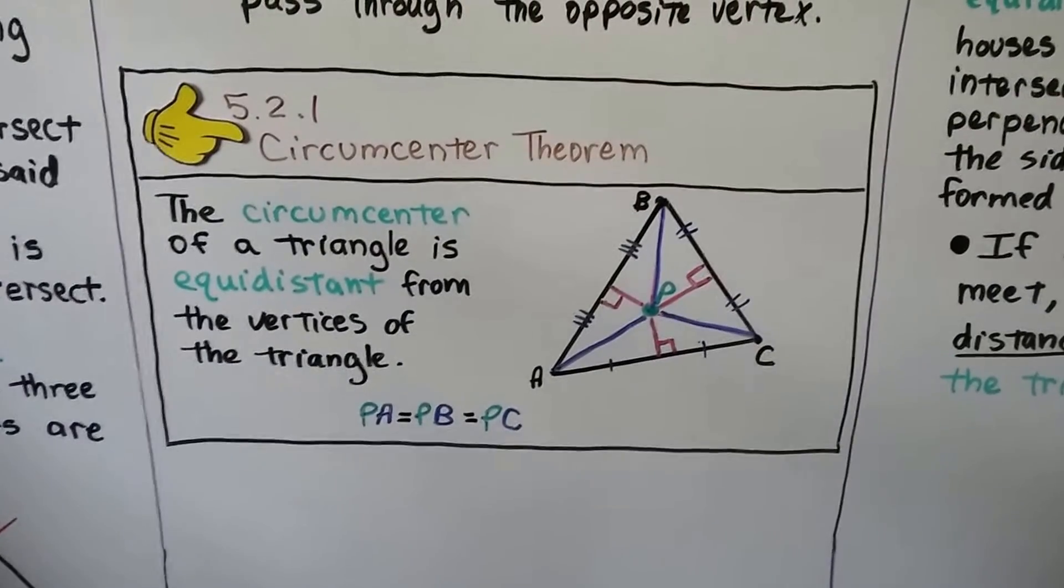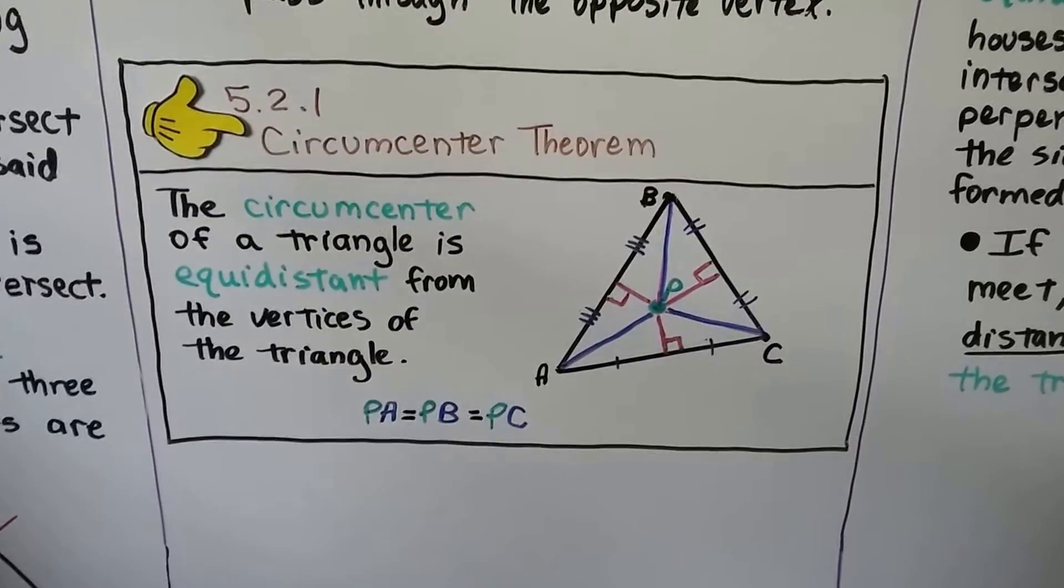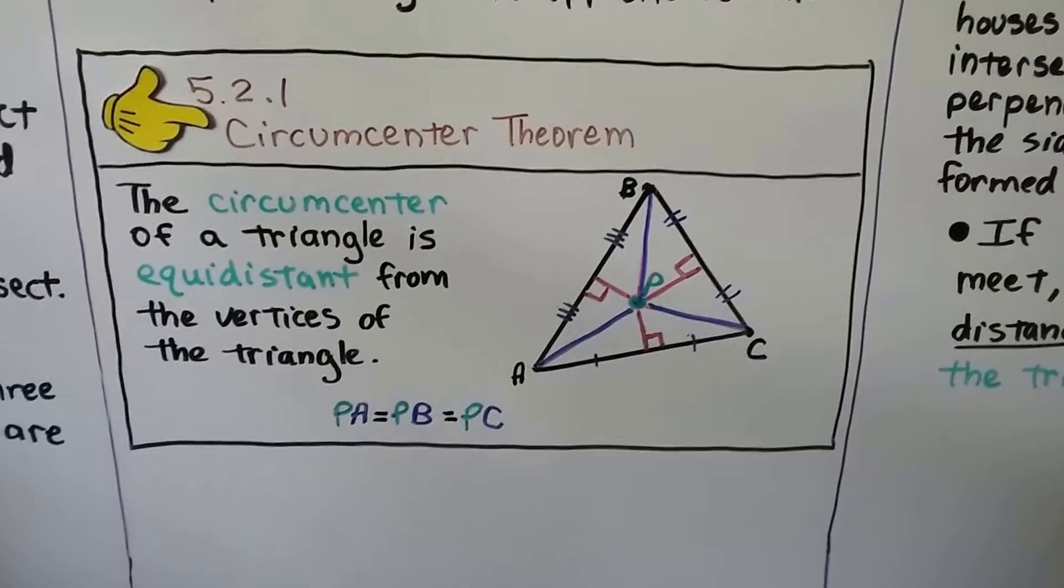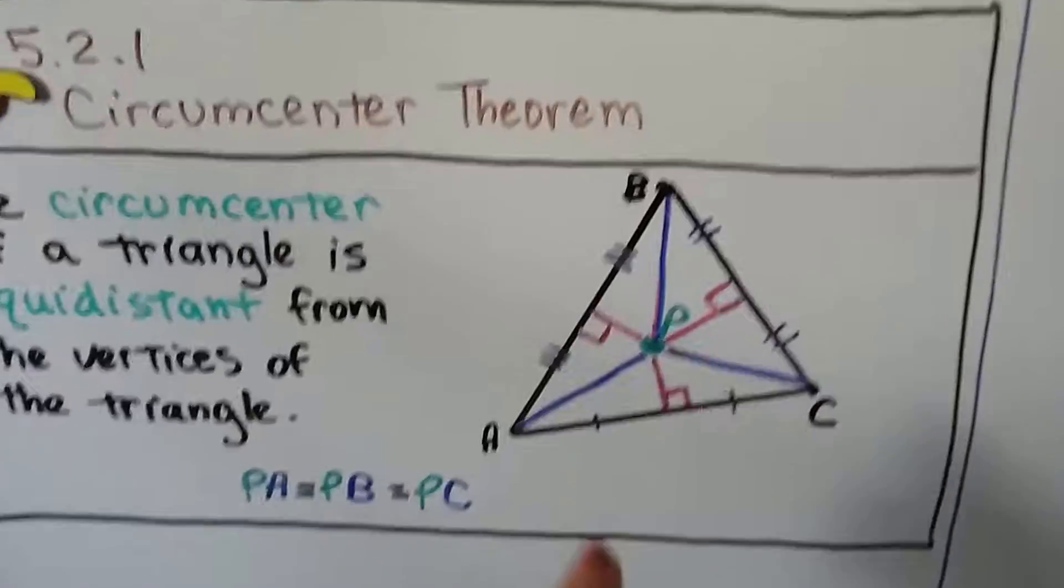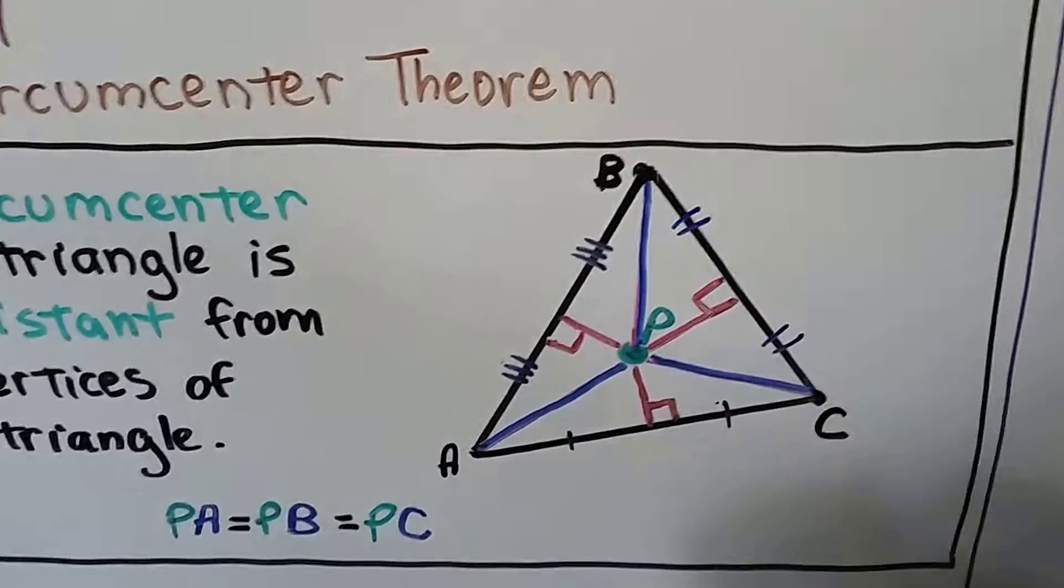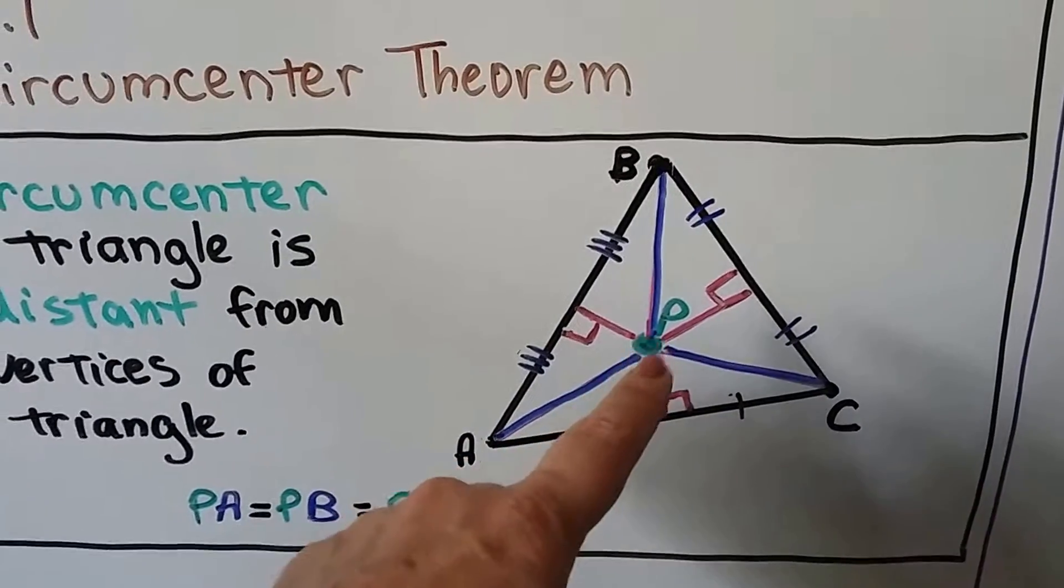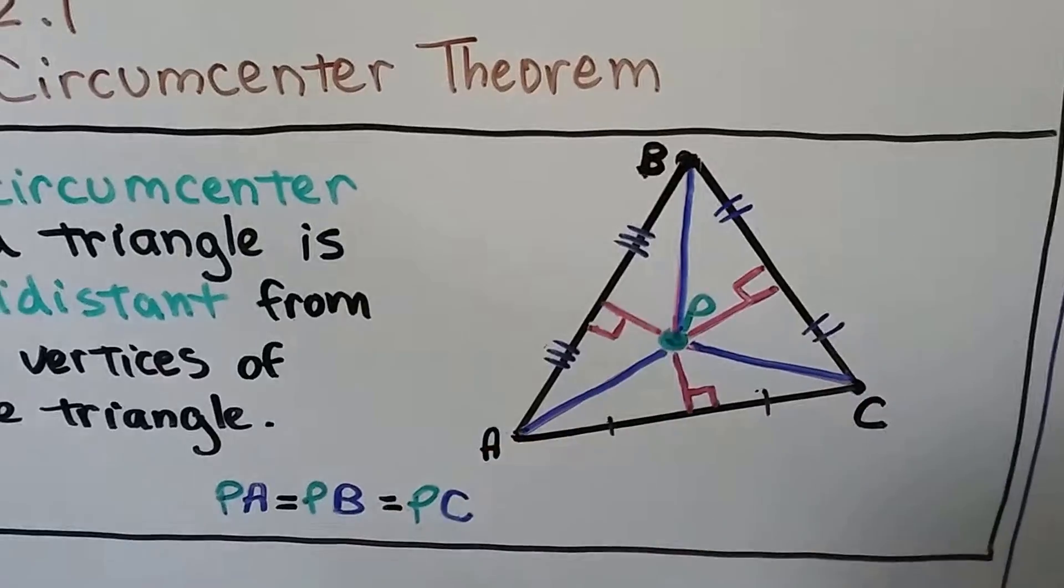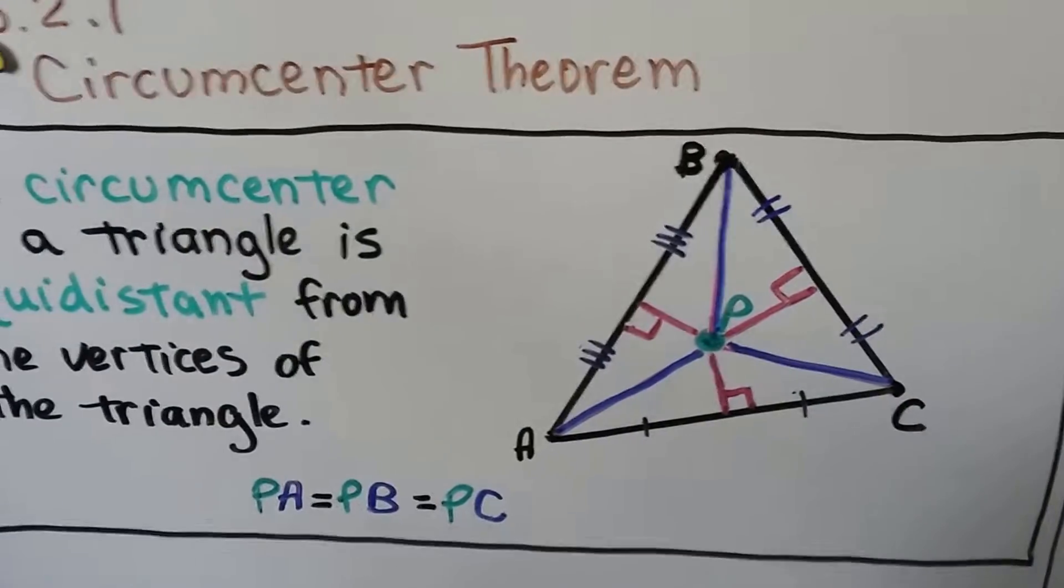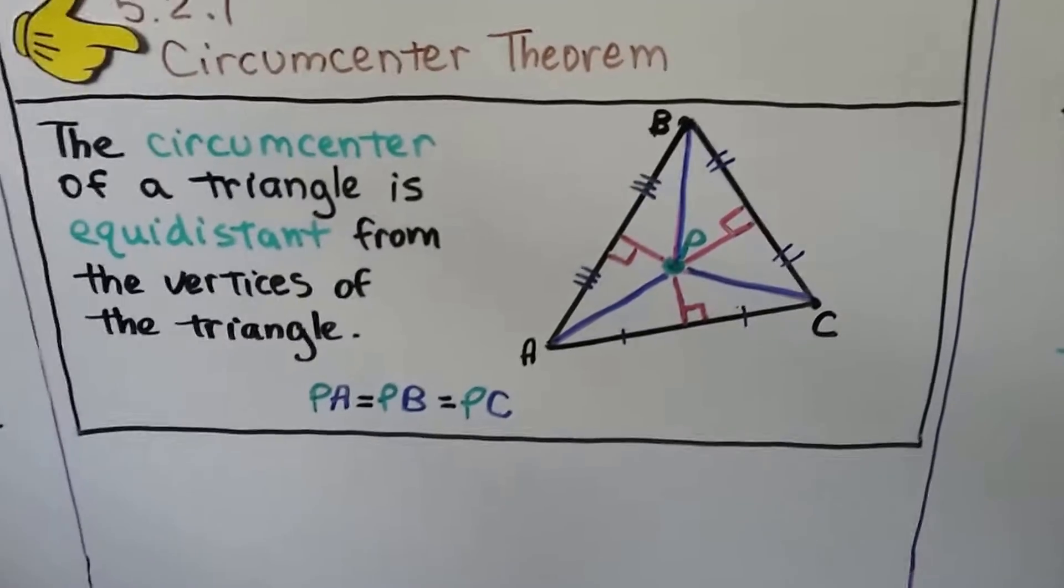Here's the circumcenter theorem. It says the circumcenter of a triangle is equidistant from the vertices of the triangle. We have our pink lines as our perpendicular bisectors, and if we connect the vertices to P, the circumcenter, they will all be equidistant from the vertices and P. PA equals PB equals PC.